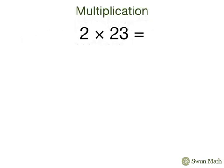When we use the distributive property, we're going to decompose 23 into 20 plus 3, and then multiply each by 2, and then add up the two products.